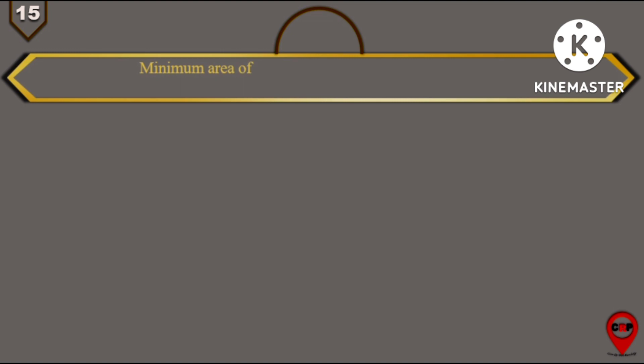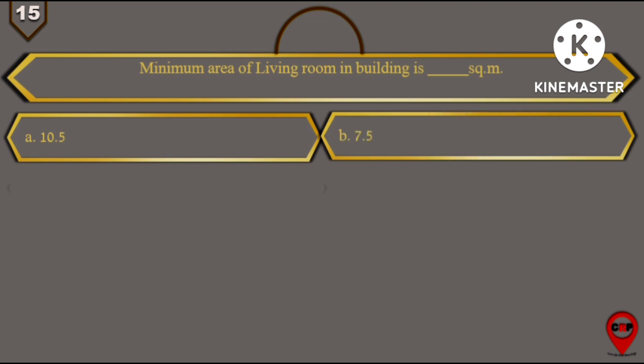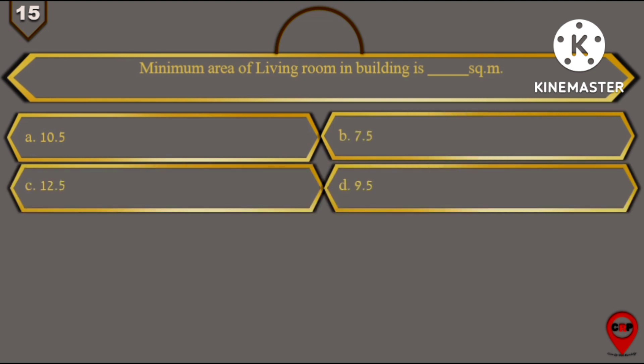Then next question, question number 15: Minimum area of living room in building is blank square meter. Options are: A. 10.5, B. 7.5, C. 12.5, and D. 9.5.